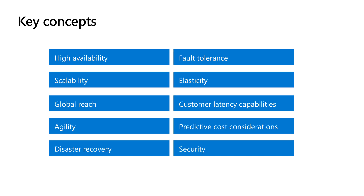Disaster recovery is the set of policies, tools, and procedures to enable the recovery or continuation of vital technology infrastructure and systems following a natural or human-induced disaster. Fault tolerance is the way in which a system responds to a hardware or software failure. As you architect, design, and deploy systems to run in the cloud, you want to ensure that they incorporate fault tolerance. If you visit your bank's website and receive a message that login capabilities are down for maintenance, you have trust that proper precautions have been put in place. But if the site doesn't load or shows strange characters, you have much less trust that your money is being handled properly.